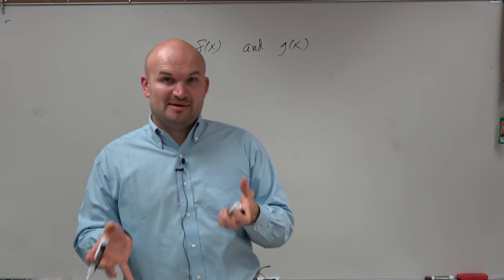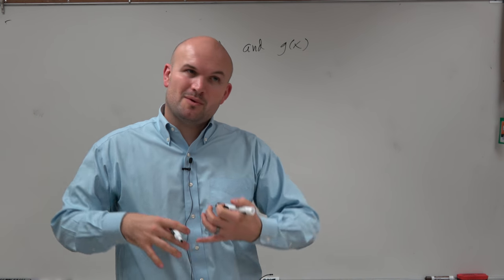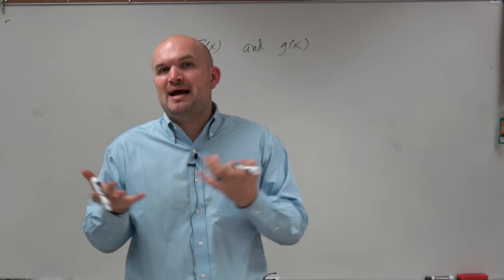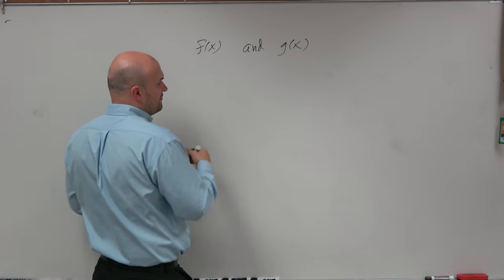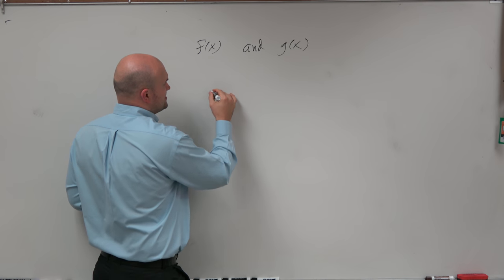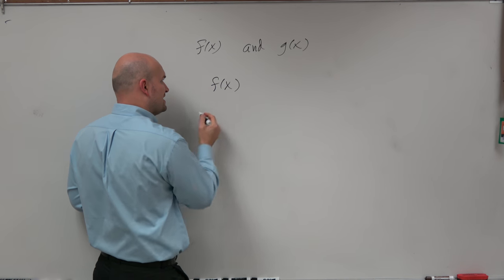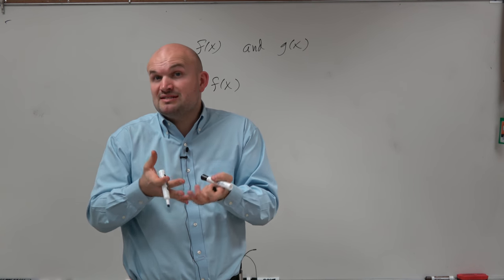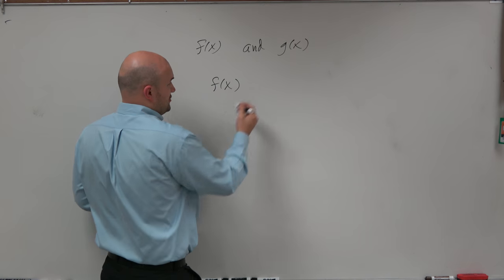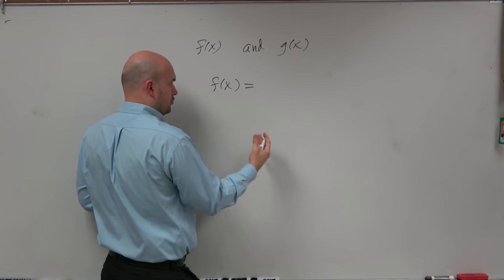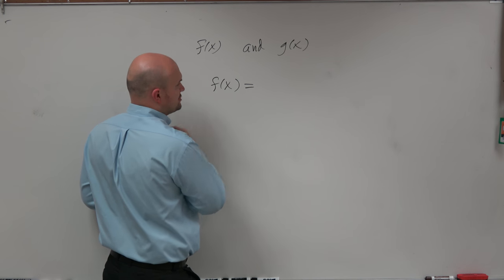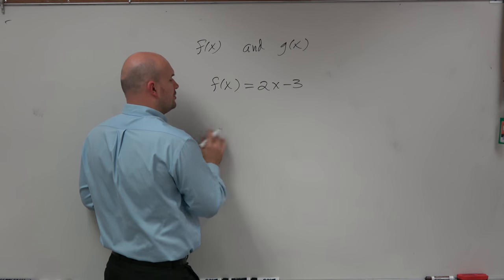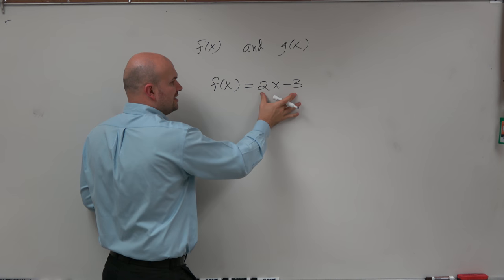Now, composing basically means we're going to plug one function into the other. The best way and the easiest way to understand this is just to go back to evaluating functions. When we first started learning about functions, we learned how to evaluate them. So for instance, we have a function f of x. f represents the name, and then inside the parentheses x represents our input value. And then we have some sort of rule that is going to represent the function. For instance, let's just do 2x minus 3 as our rule. So x is our input value, here is our rule.